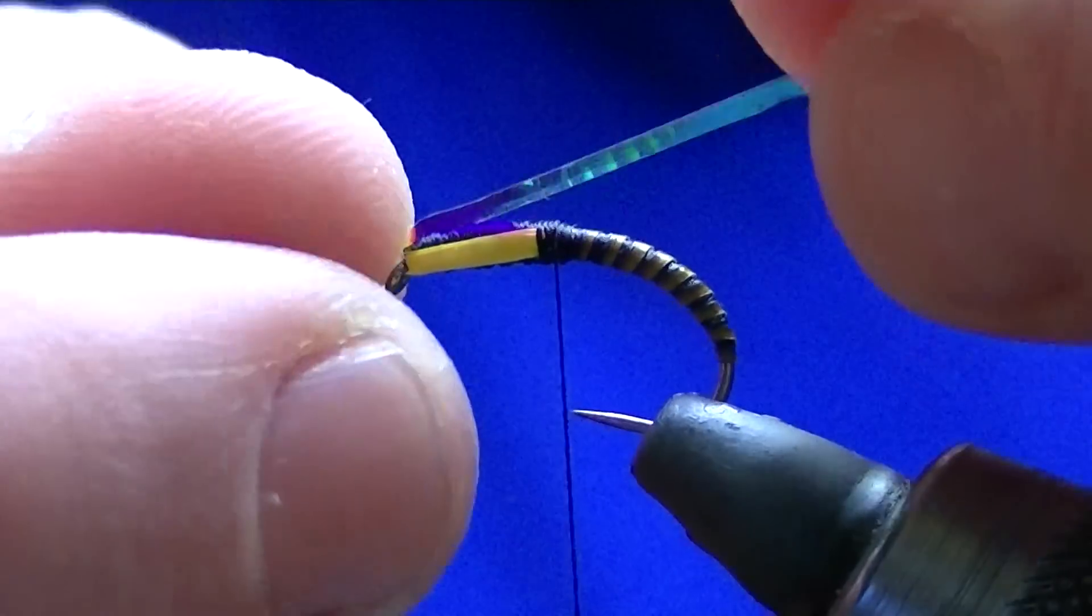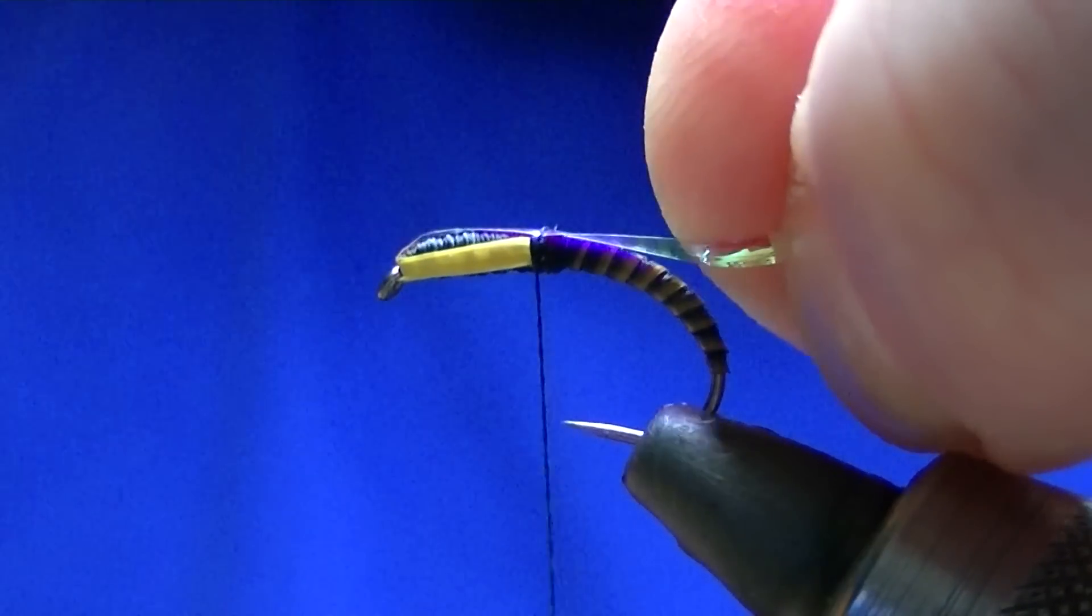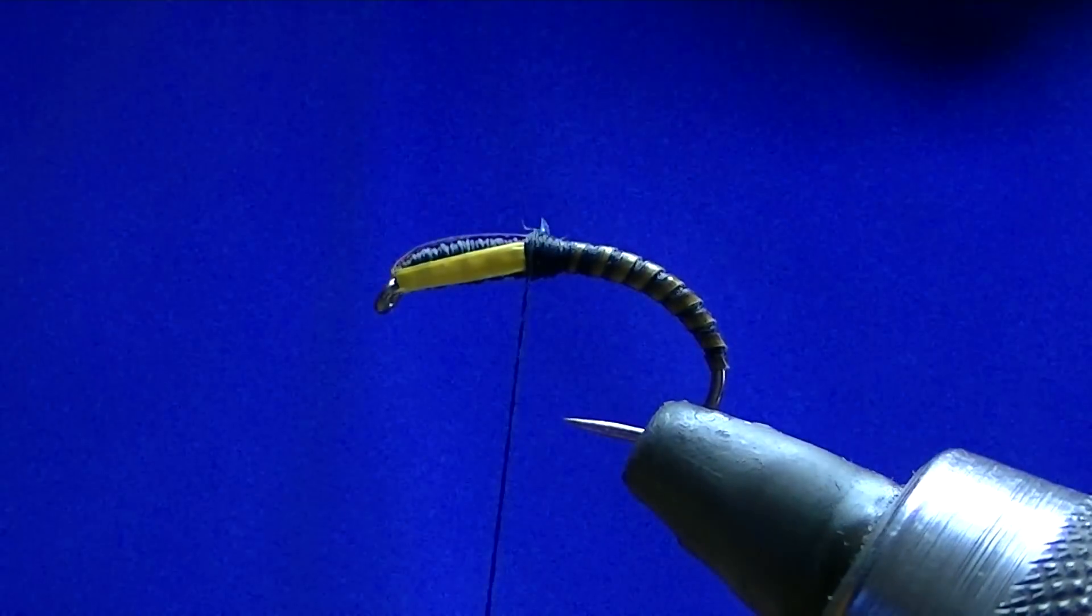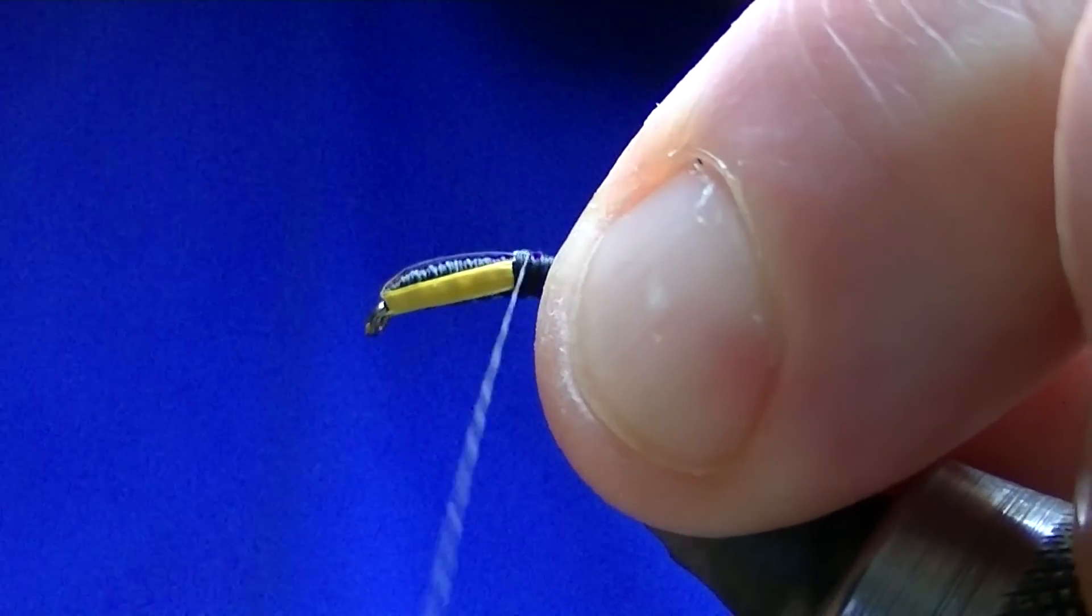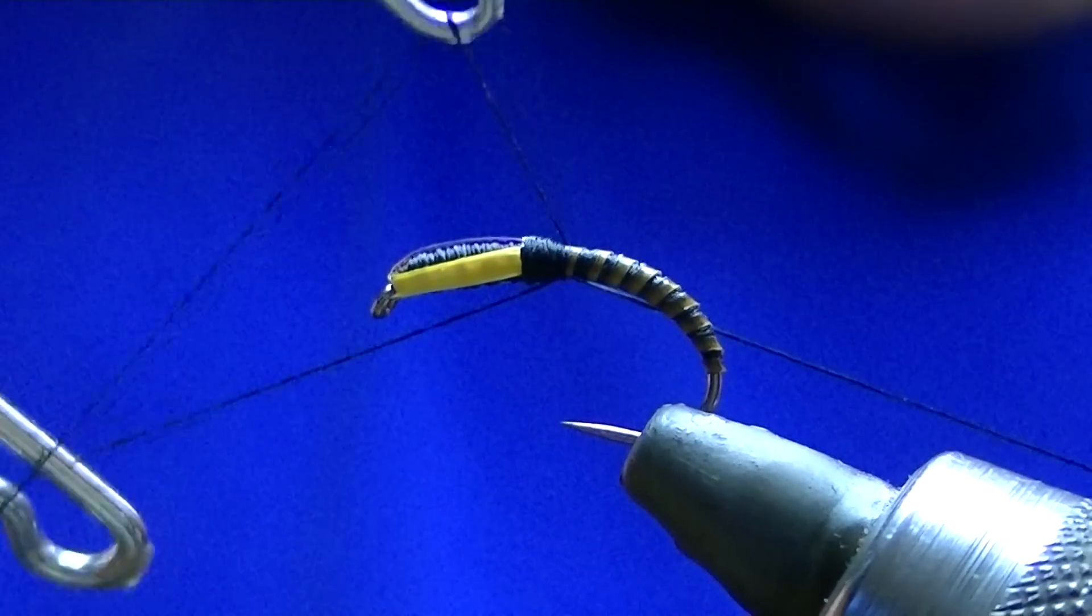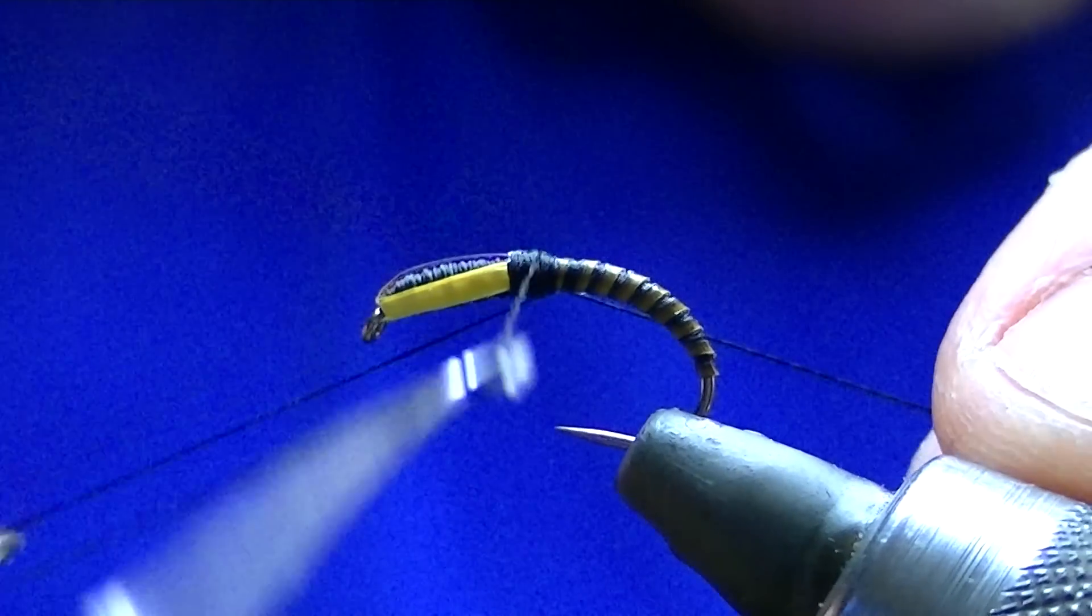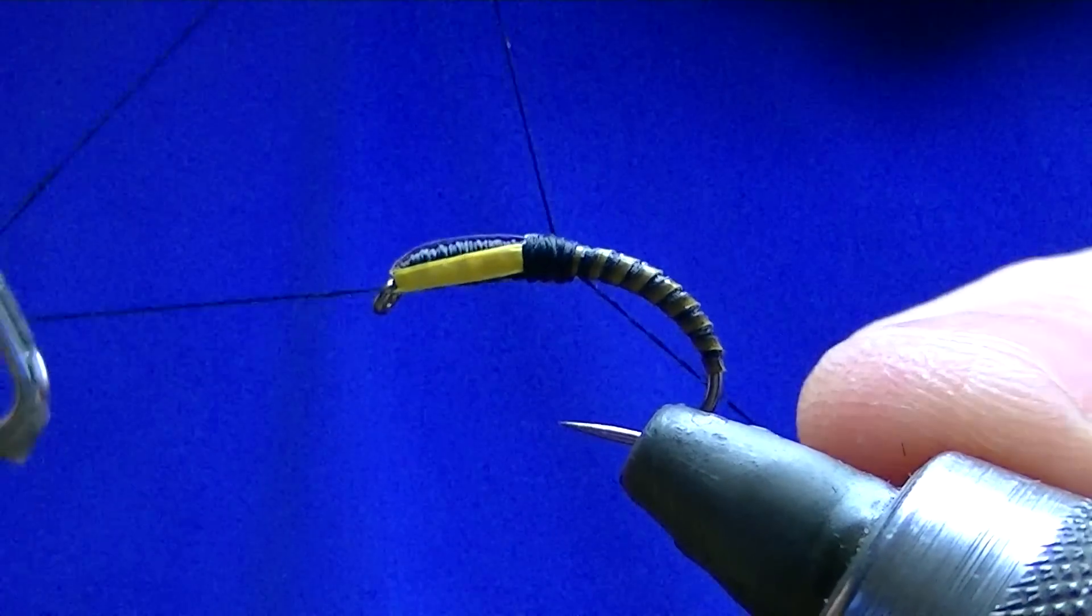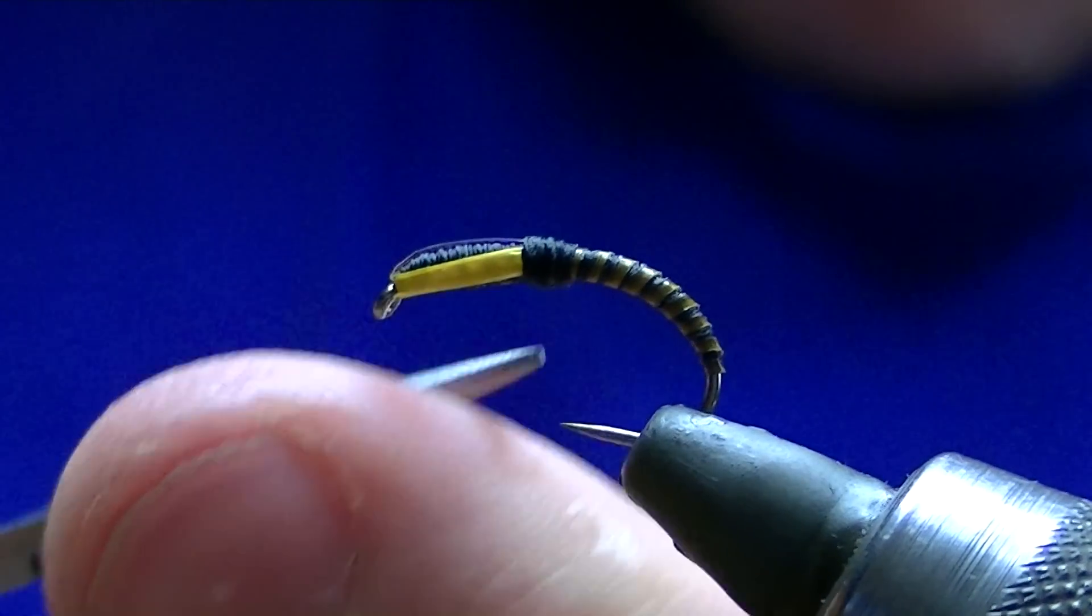Last thing we've got to do is pull the thorax cover over. So I'm just pulling that over, catch it in. Trim it. And just cover the remainder up with thread. Two whip finishes.